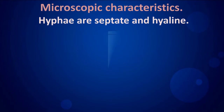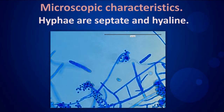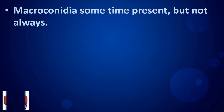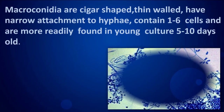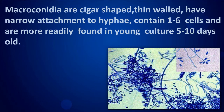Microscopic characteristics: hyphae are septate and hyaline. Macroconidia are sometimes present but not always. When present, macroconidia are cigar-shaped, thin-walled, have a narrow attachment to the hyphae, contain one to six cells, and are more readily found in young cultures five to ten days old.